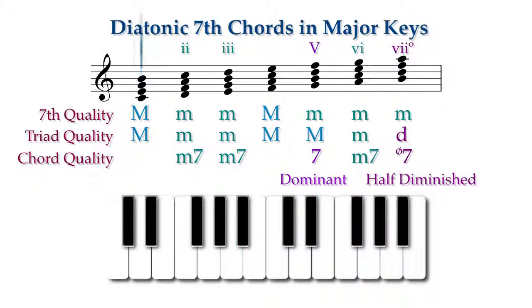The tonic and subdominant seventh chords are major triads with major sevenths, or simply major seventh chords.